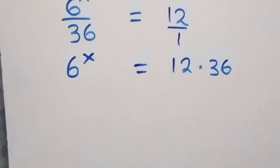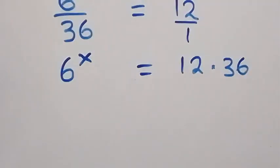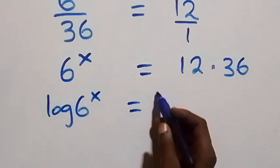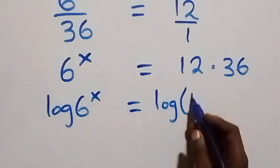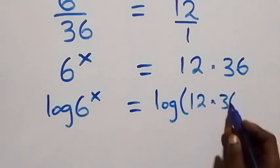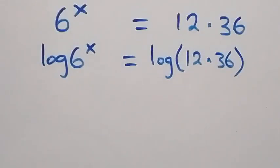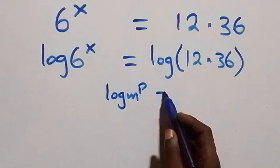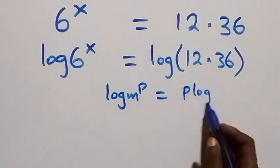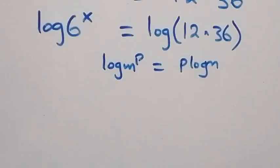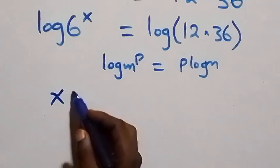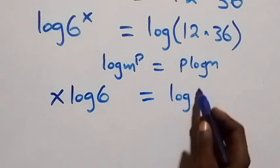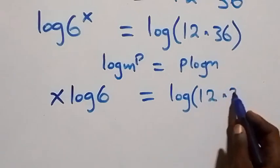From here we take the log on both sides: log of 6 raised to power x equals log of 12 times 36. Then we apply the power law of logarithm, where log m raised to power p equals p log m. So this becomes x log 6 equals log of 12 times 36.